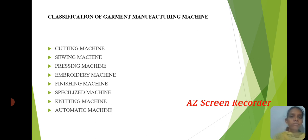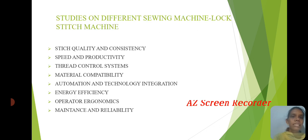The classification includes: Cutting Machine, Sewing Machine, Pressing Machine, Embroidery Machine, Finishing Machine, Specialized Machine, Knitting Machine, and Automatic Machine. Studies on different sewing machines.